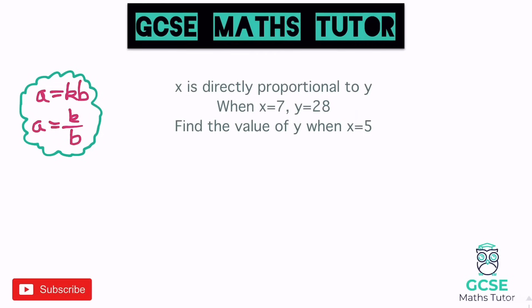Being directly proportional to something means it's basically multiplied by a constant number to find the other value. So if x is directly proportional to y, multiplying y by some constant k gives x. We call that letter k — it stands for the constant. Grab a pen and paper and make notes, because we've got a few examples with direct proportion.